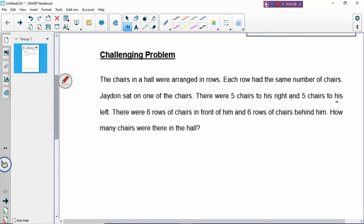Let's look at this problem. This is a 3-mark question. The chairs in the hall were arranged in rows. Each row had the same number of chairs. Jaden sat on one of the chairs. There were 5 chairs to his right and 5 chairs to his left. There were 6 rows of chairs in front of him and 6 rows of chairs behind him. How many chairs were there in the hall?